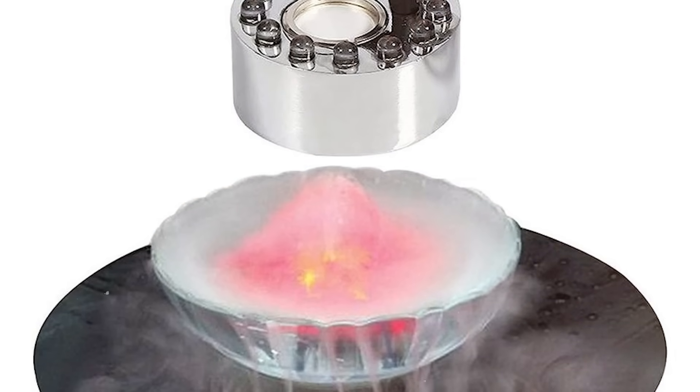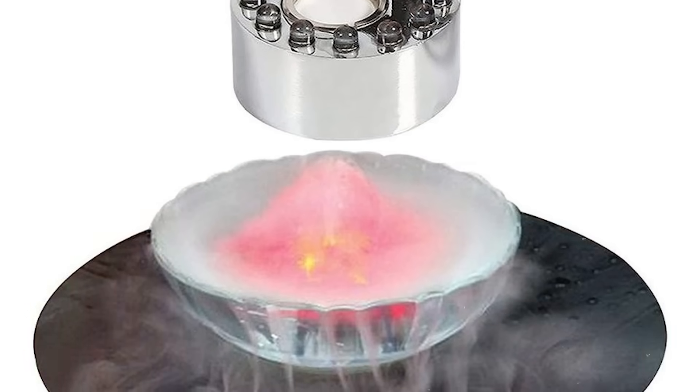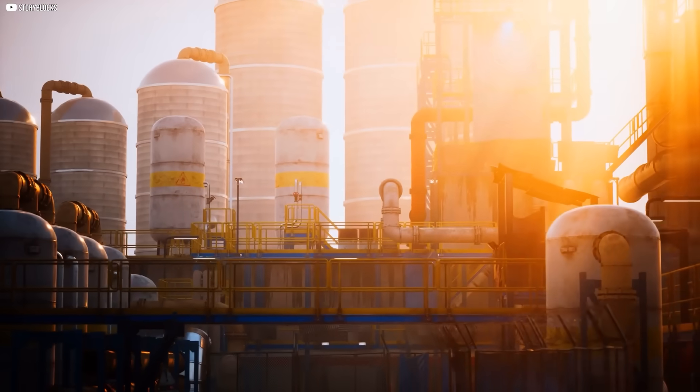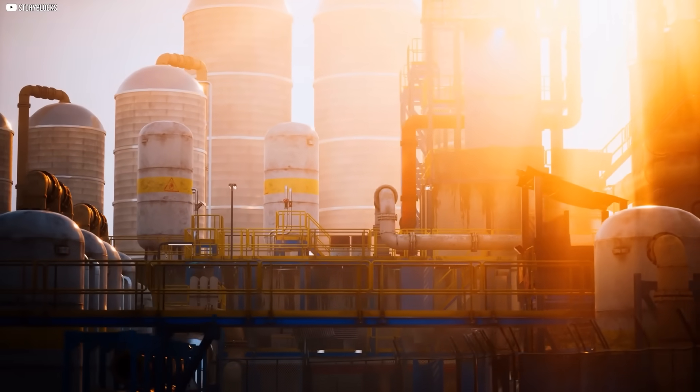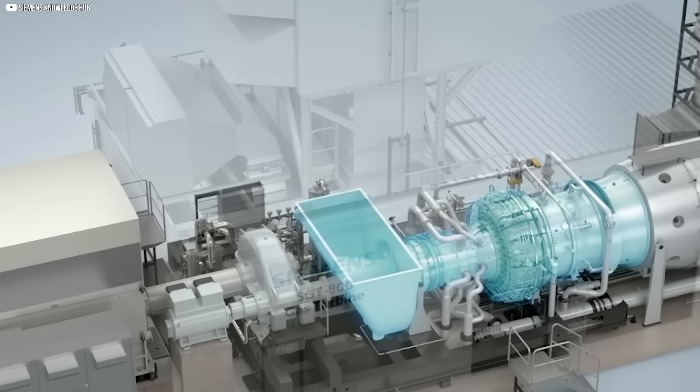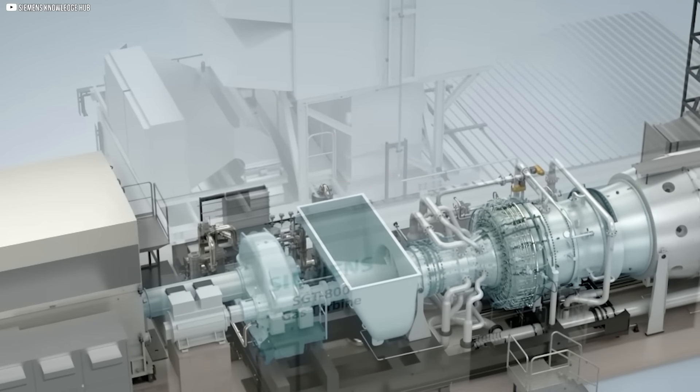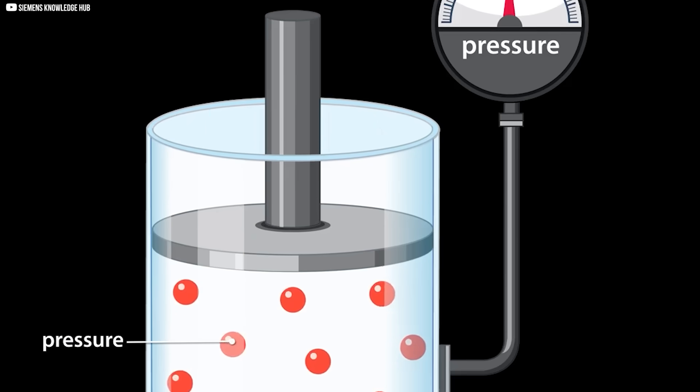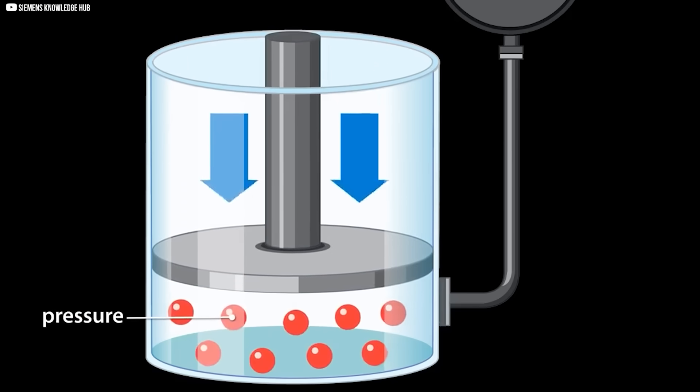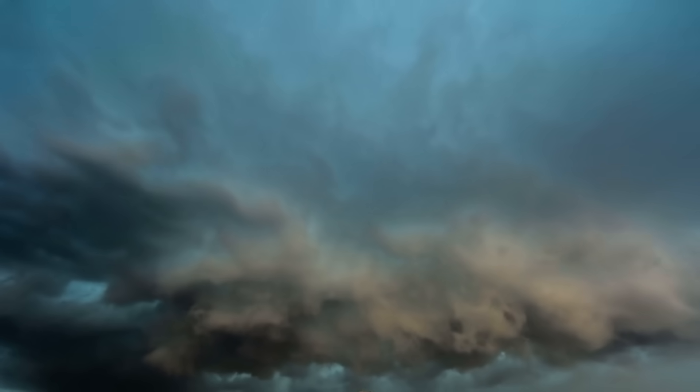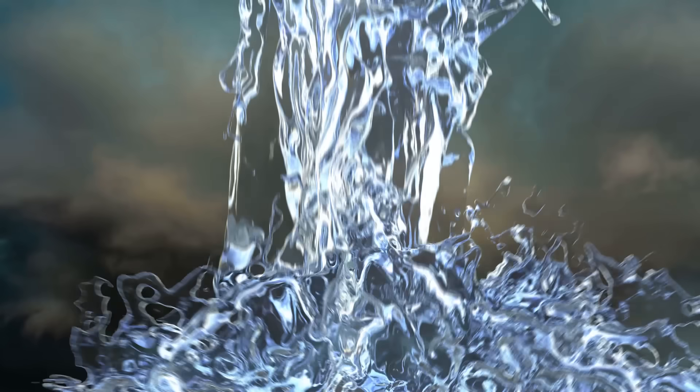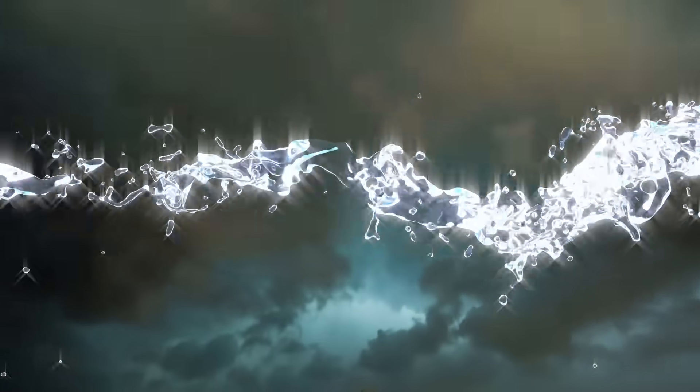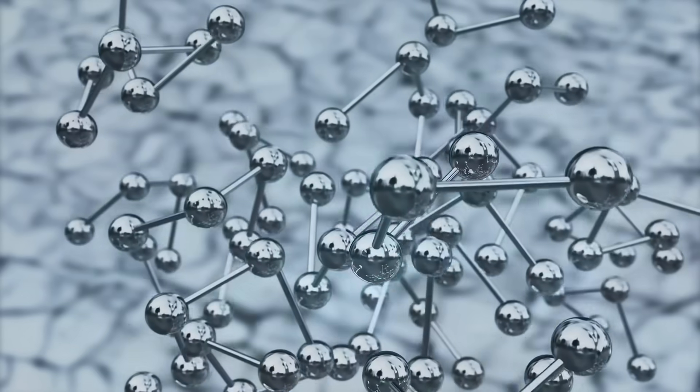When both the temperature and pressure rise above a certain critical point, carbon dioxide enters a state that cannot be neatly classified. It no longer behaves like a pure liquid or a pure gas. Instead, it takes on the traits of both at once. It flows easily through pipes like air, yet it presses against surfaces with the density of a fluid. Imagine something invisible like wind, but as heavy as water. It is neither one nor the other. It is suspended in a kind of middle ground.